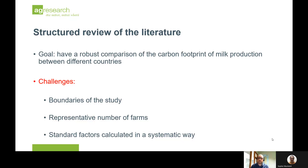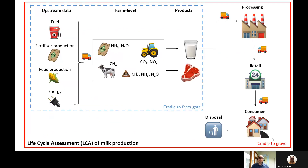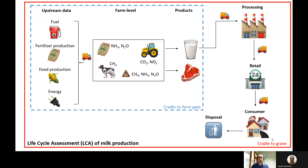Starting with the boundaries: normally the carbon footprint is calculated by the life cycle assessment methodology, which considers the whole life cycle of a product — in this case, the milk, or the red boundary that you can see. From previous research, we know that most of the emissions are up to the farm gate. So this blue dashed boundary is what we call cradle to farm gate, and that was the boundary we chose. Most published studies also use that boundary.